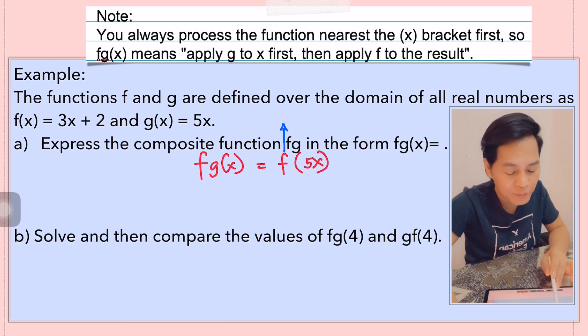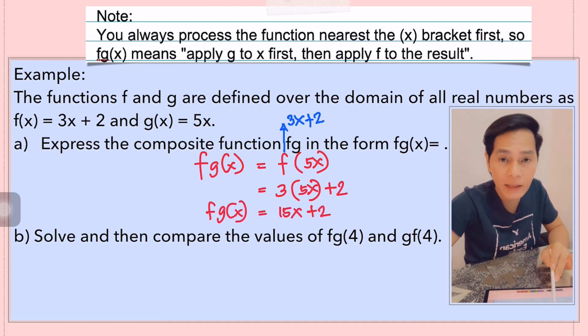Apply f to the result, meaning I'm going to substitute 5x to the function of f which is 3x plus 2. So here we go. We have 3 times 5x. I am substituting now the value of x which is 5x plus 2. And then I am going to simplify. You have here now the f of g of x is equal to 15x plus 2.